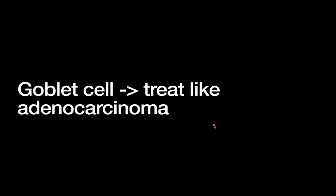The goblet cell tumor is the easiest to address. Since they have adenocarcinoma-type features in them, they're just treated like adenocarcinoma. This is generally the case in cancer surgery: if something has mixed features of two different cancers, you treat it like the more aggressive one.